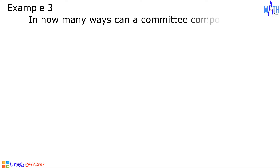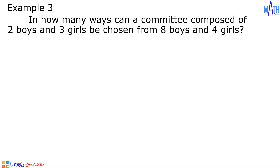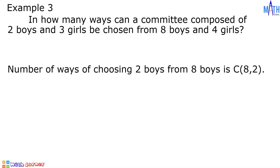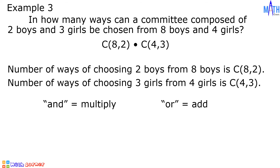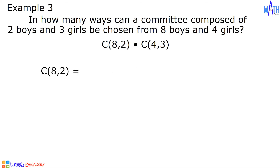Example number 3: in how many ways can a committee composed of 2 boys and 3 girls be chosen from 8 boys and 4 girls? The number of ways of choosing 2 boys is the combination of 8 taken 2 at a time. Note that the word 'and' means multiply and the word 'or' means add. The combination of 8 taken 2 at a time is equal to 8 times 7 over 2 times 1. 8 times 7 is 56, over 2 times 1 is 2. 56 divided by 2 is 28.